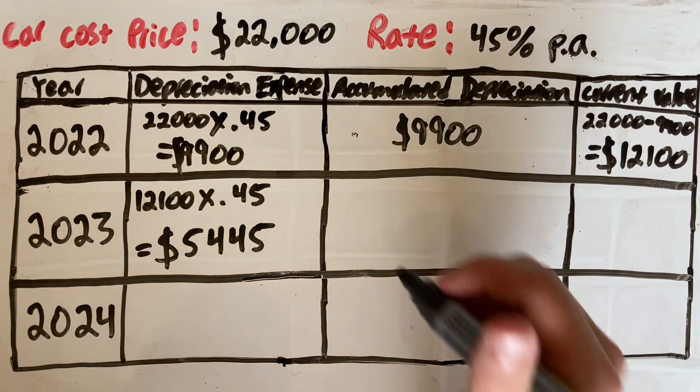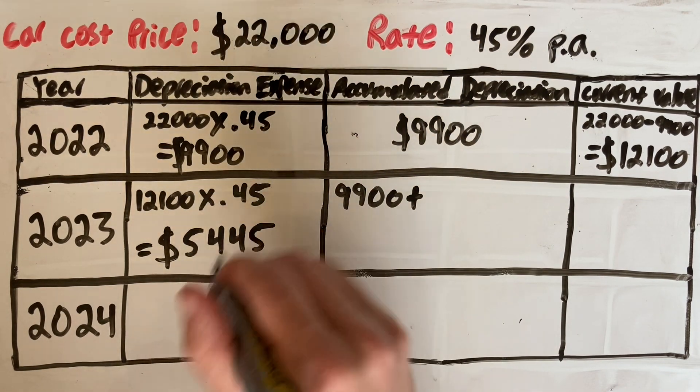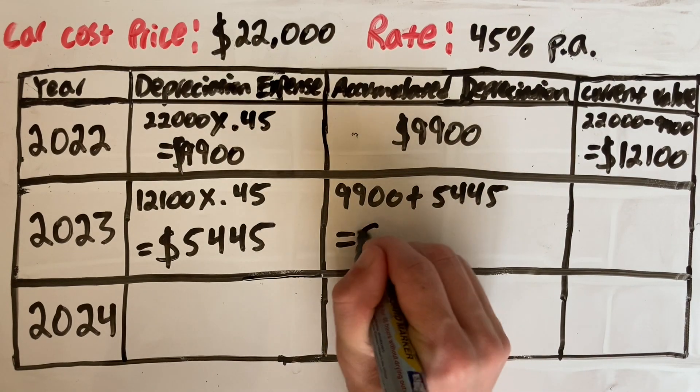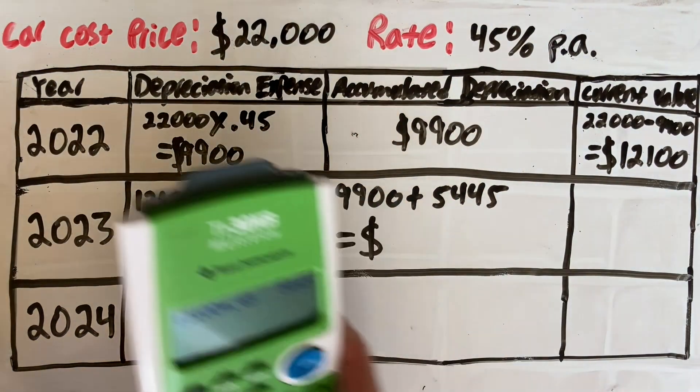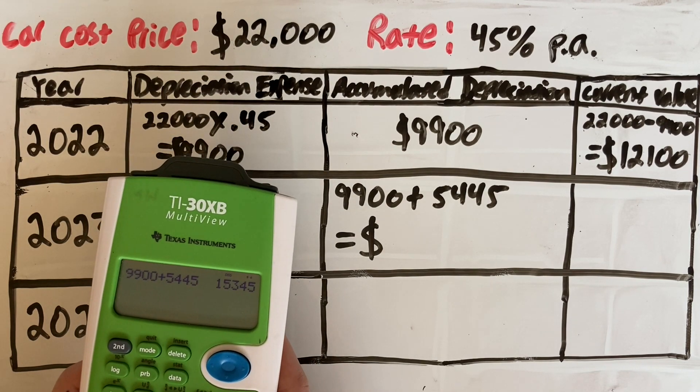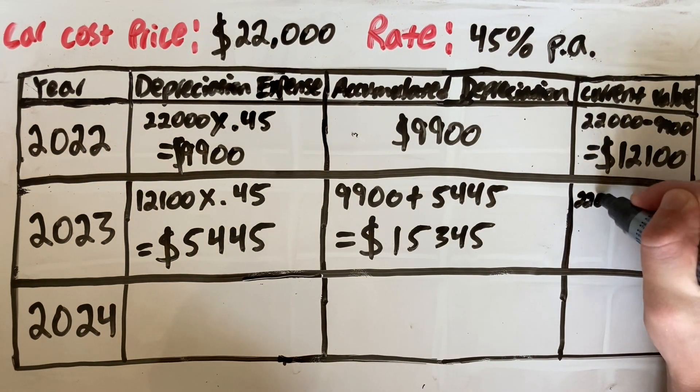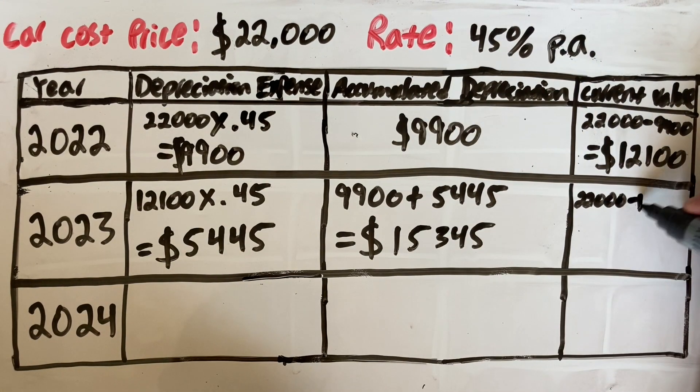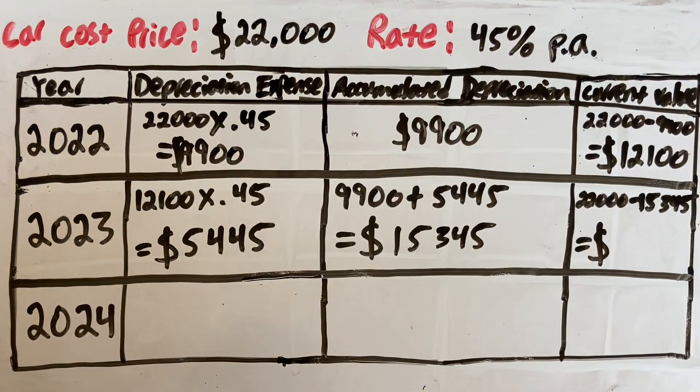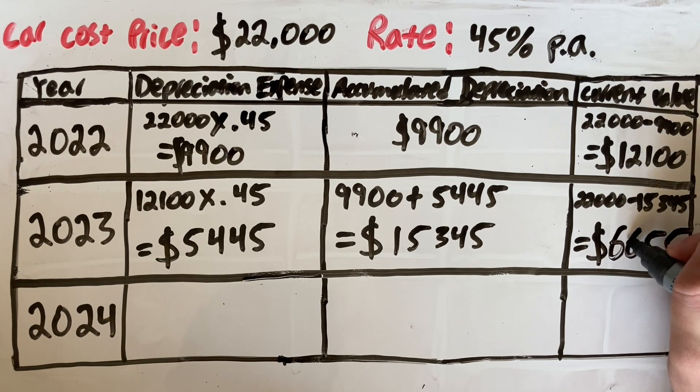Now onto our accumulated depreciation. This is just the total of all the depreciation that has occurred in our asset so far, in our car. We do this by adding the depreciation expense from each year. So that is $9,900 plus $5,445, which gives us an accumulated depreciation of $15,345. Then to get your current value, you take your original value minus your accumulated depreciation. We get $6,655 as our current value or what the asset is worth at the end of 2023.